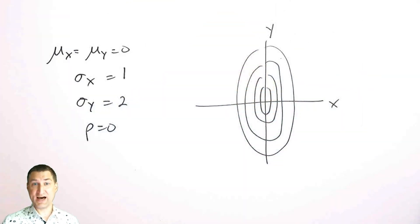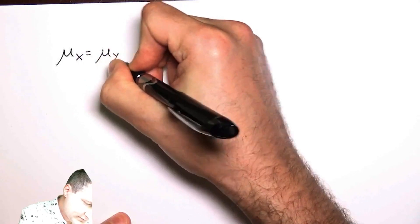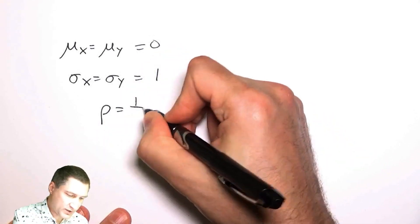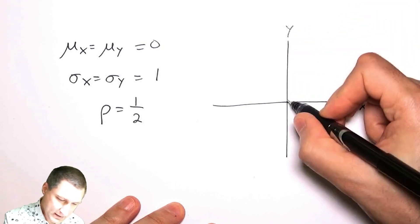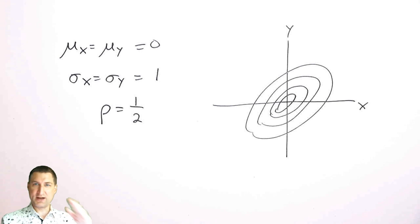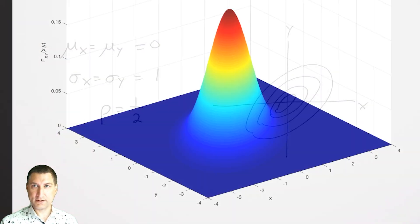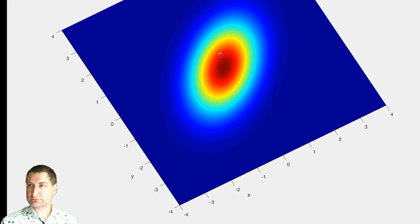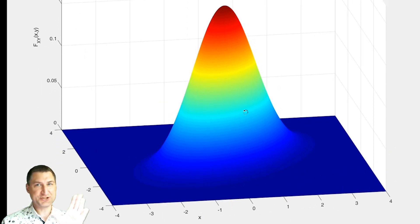What happens when rho is not equal to 0? If I have 0 mean, equal variances of 1, and rho equals 1/2, I get elliptical contours that are oriented — rho kind of defines how the random variables are coupled together. Looking at it from the top in MATLAB, I can see exactly this diagonal offset. It almost looks like the previous shape rotated by 45 degrees, and there's a reason for that which I'll discuss later.